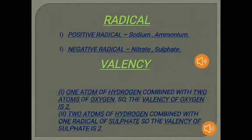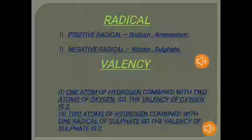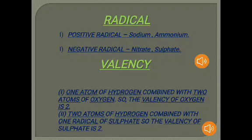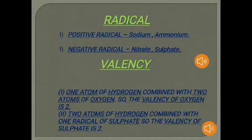There are two types of radicals: positive radicals and negative radicals. A positive radical has a positive charge on the group, behaving like hydrogen or a metal in a chemical reaction. An example is the ammonium radical, NH4+. A negative radical behaves like a non-metal in a chemical reaction and carries a negative charge. Examples include carbonate, sulfate, and nitrate radicals. A compound may be considered to have a positive part and a negative part.